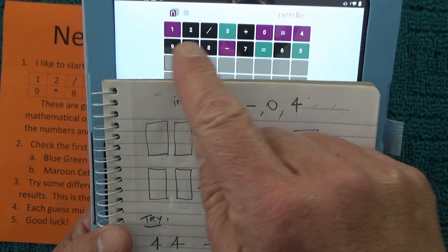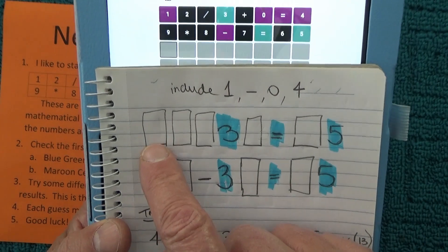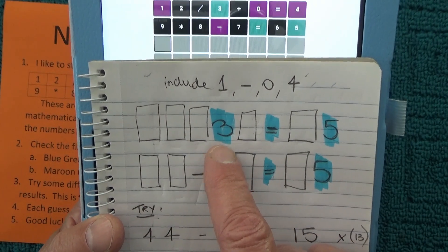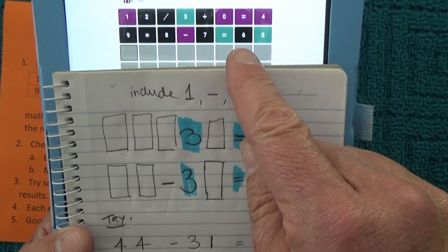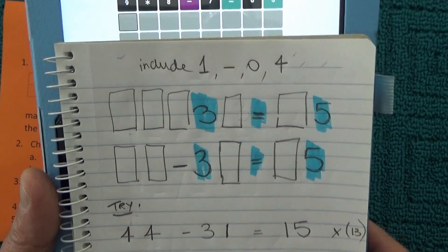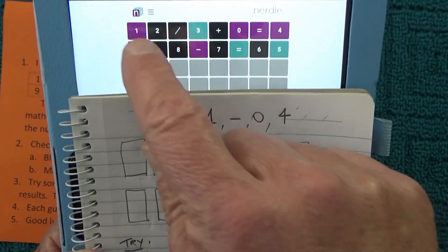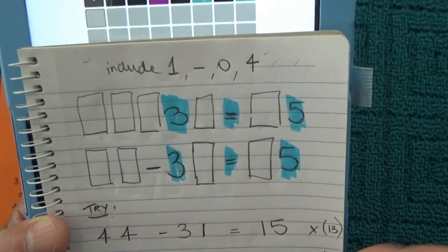So once you've done those two equations, I like to get a pad and paper and try and work out what the answer might be. So you can see there I've got the 1, 2, 3 blanks and 3, which is going to be part of the final answer. Blank equals blank and 5. So I put that there, and then I've also realized that I've got to include 1, minus, 0, and 4 in the final answer as well.